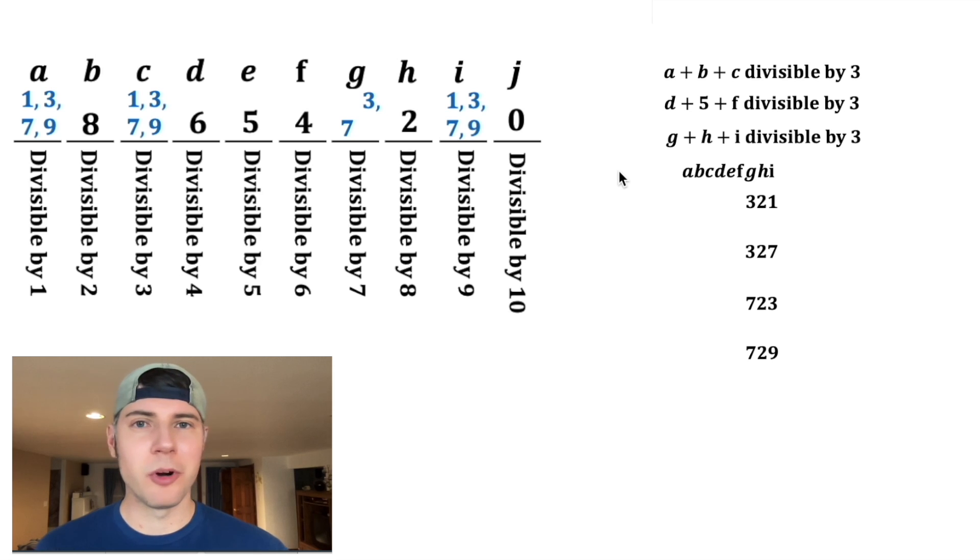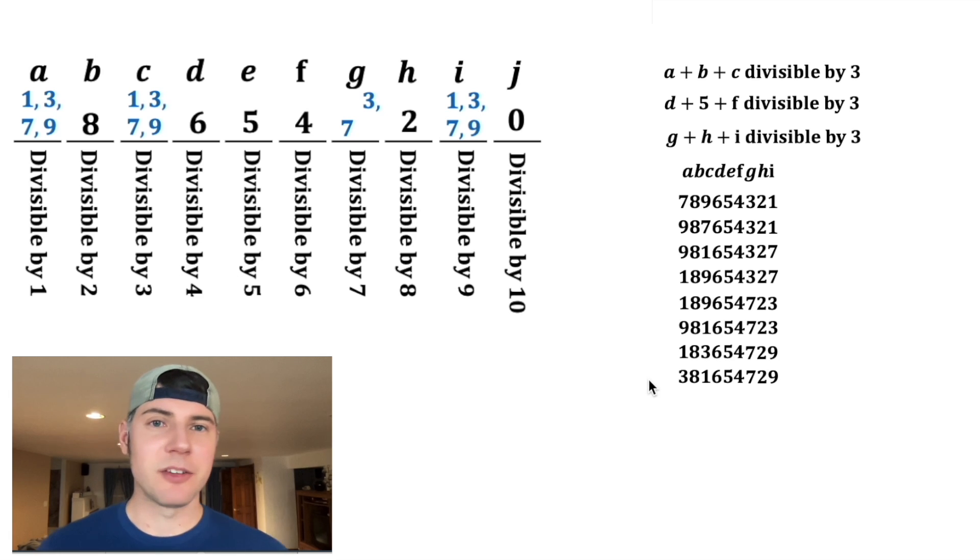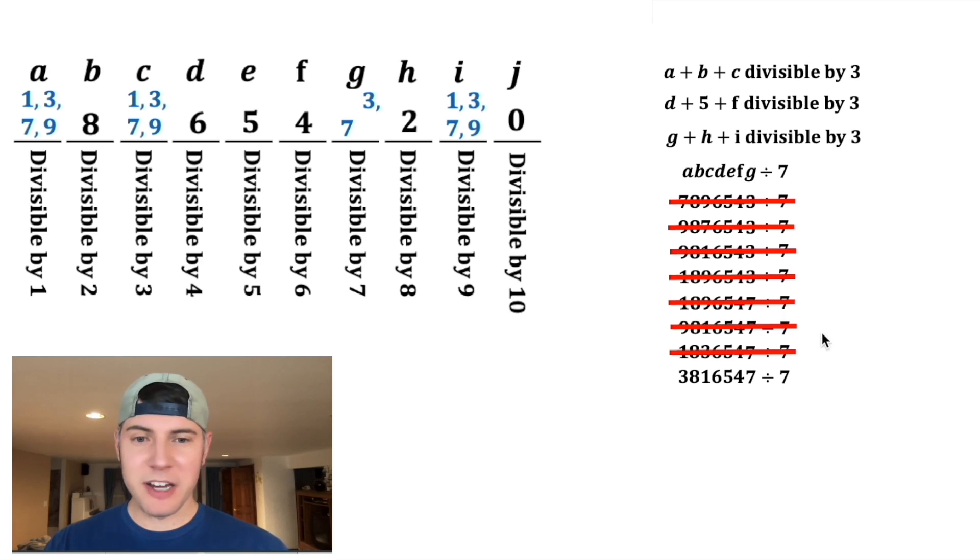We know the DEF is 6, 5, 4, and we know that B is equal to 8. So since we're using the 3 and the 1 here, that only leaves 7 and 9 for the A and the C. Same idea here. We're using the 3 and the 7, that leaves 9 and 1 for A and C. So now if we get rid of the HI, we can check for division by 7 again. Well, this first one is not divisible by 7. In fact, none of these are divisible by 7 except for this one. So this is the only possibility that works.